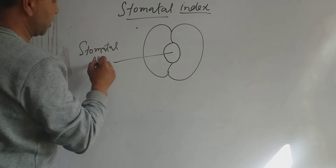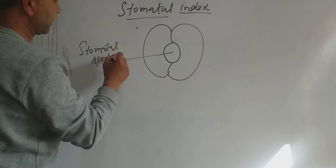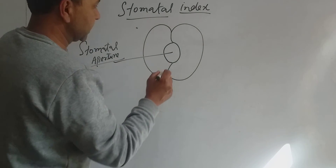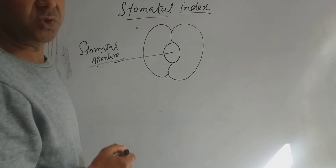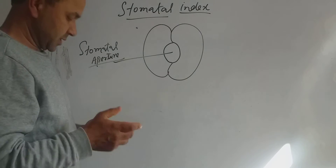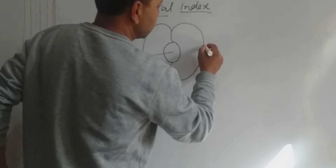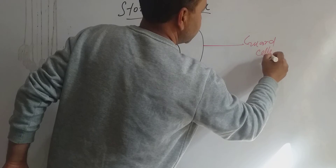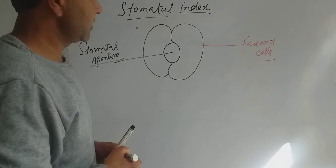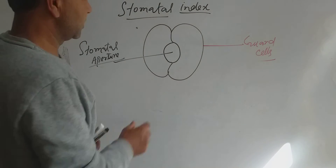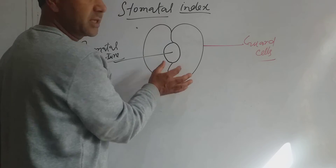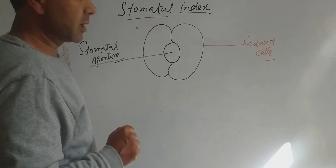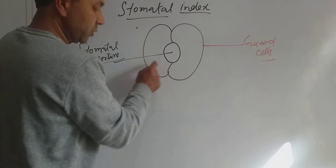This stomatal aperture or stomatal pore is surrounded by two special types of epidermal cells known as guard cells. These guard cells, as I have already mentioned in the previous lecture, are bean-shaped or kidney-shaped in case of dicots, and they are dumbbell-shaped in case of monocots. They also have some unique features.